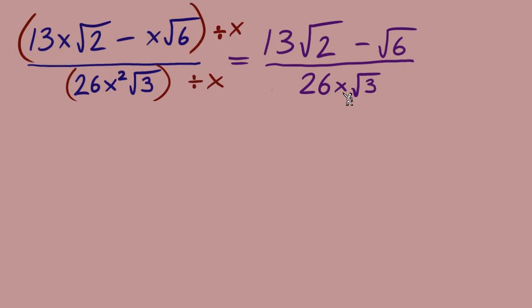That's all we can do in terms of simplifying the fraction. Can we simplify any of our radicals? Radical 2 — we cannot simplify. We cannot simplify radical 3 or radical 6. That leaves us with rationalizing the denominator.